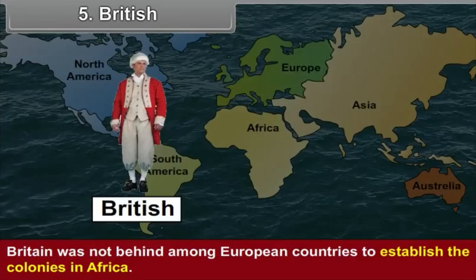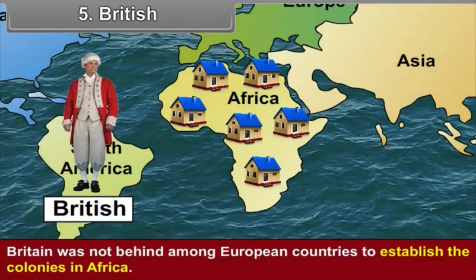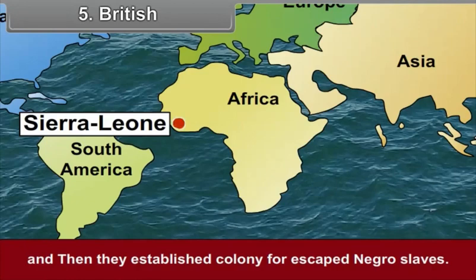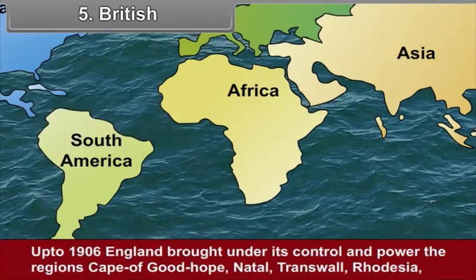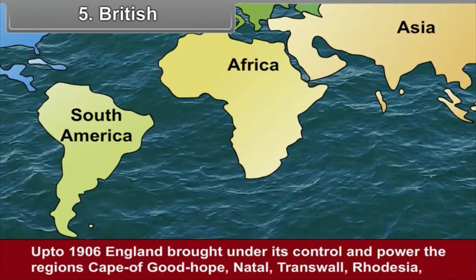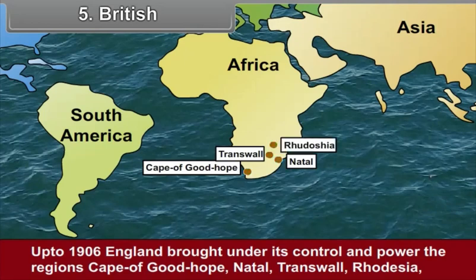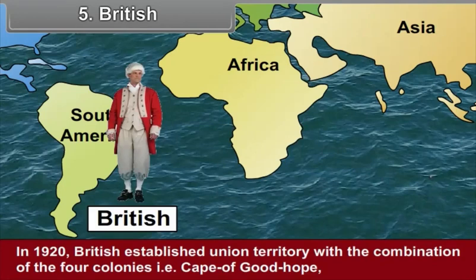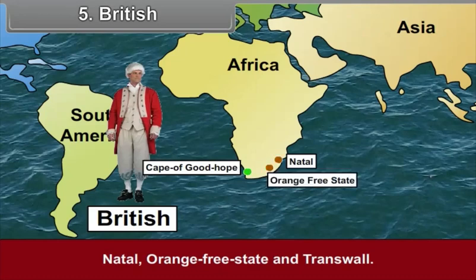Fifth, the British. Britain was not behind other European countries in establishing colonies in Africa. British established a market for slave trade in Sierra Leone and then established a colony for escaped Negro slaves. Up to 1906, England brought under its control the regions of Cape of Good Hope, Natal, Transvaal, Rhodesia, Orange Free State, Nyasaland, Zanzibar, Pemba and Uganda. In 1920, the British established a Union territory combining four colonies: Cape of Good Hope, Natal, Orange Free State and Transvaal.